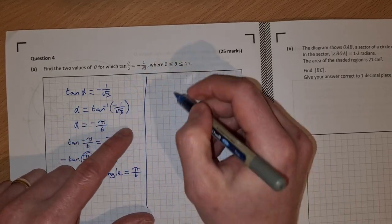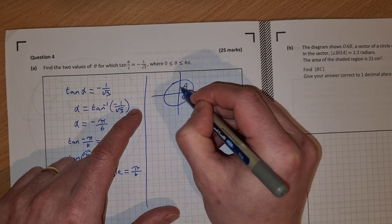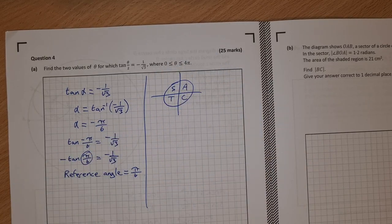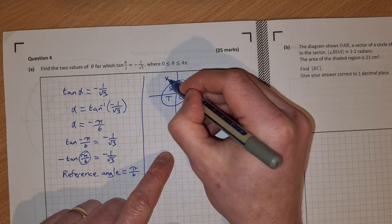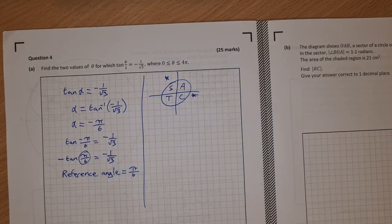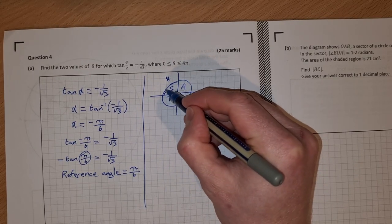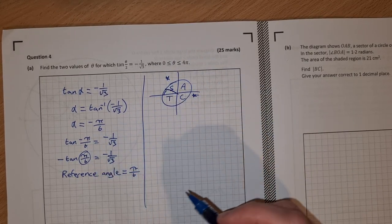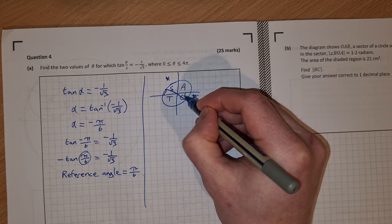CAST. And we want to know when is tan negative. Tan is negative in the second and in the fourth quadrant. So it's going to be pi minus pi over 6, and it's going to be 2 pi minus pi over 6.